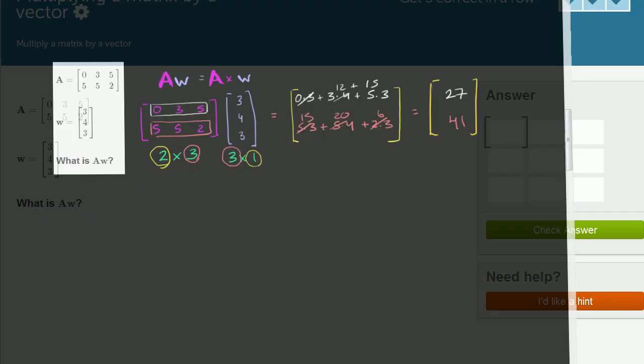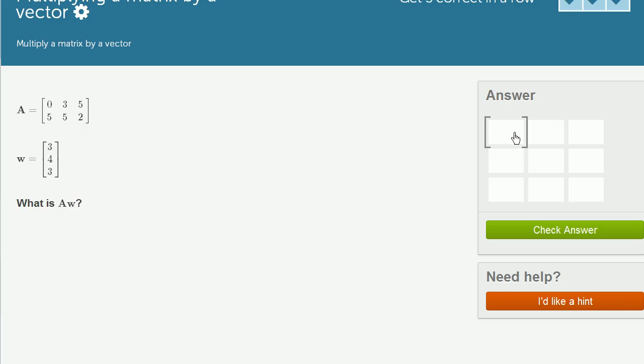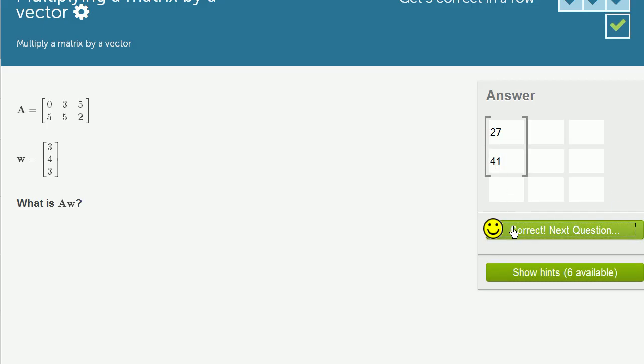Now let's input that. 27 and 41. So we get 27, and here we can put a 41 and check our answer, and we got it right.